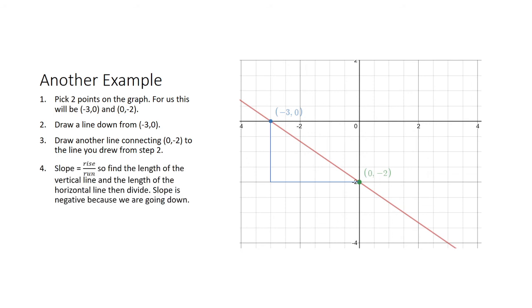Slope is rise over run, so I want to find the length of the vertical line and the length of the horizontal line and then divide. Here, the line is going down from left to right, therefore the slope is negative.